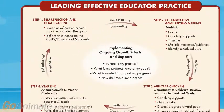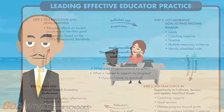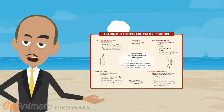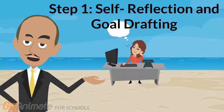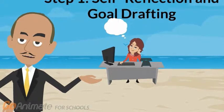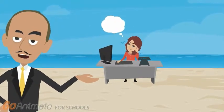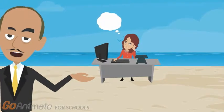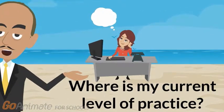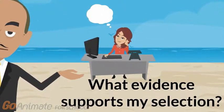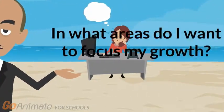Now it's time for us to take you through each of the four steps of the professional growth cycle. The LEAP system is a four-step cycle of continuous growth and learning. The first step is self-reflection and goal drafting. In this step, I will engage in a self-reflective process in which I assess myself based on the standards of professional practice. Some questions I might ask myself are: where is my current level of practice? What evidence supports my selection? And in what areas do I want to focus my growth?